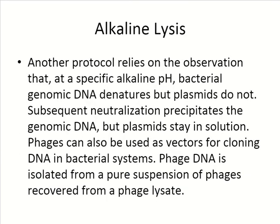There is also alkaline lysis, another technique that relies on the observation that at a specific alkaline pH, bacterial genomic DNA will denature or come apart from its complementary strand, but plasmids do not. The subsequent neutralization precipitates the genomic DNA while the plasmid DNA stays in solution. Phages can also be used as a vector for cloning DNA in bacterial systems. Phage DNA is isolated from a pure suspension of phages and recovered from a phage lysate.